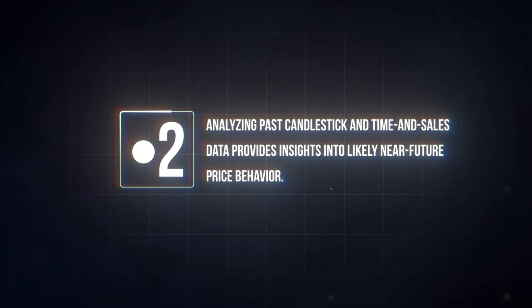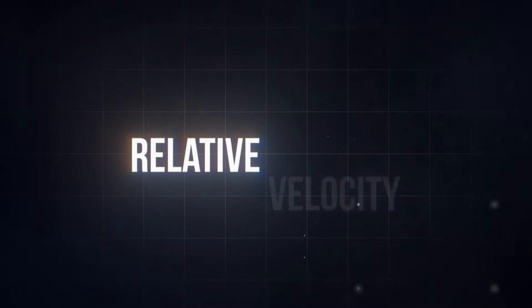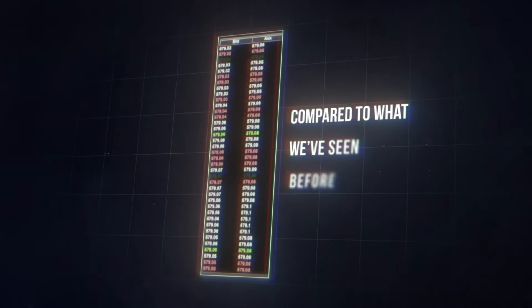To fully understand how to use time and sales as a cheat code, you need to understand one more concept. Just as past candlestick price action gives clues about how price will behave near-term, the same applies to time and sales. I call this relative velocity — it's all about how fast the numbers in time and sales are moving compared to what we've seen before. If things were cruising along slowly and then suddenly start to pick up speed, that's a sign that relative velocity is increasing.